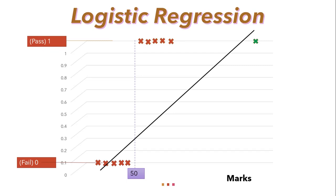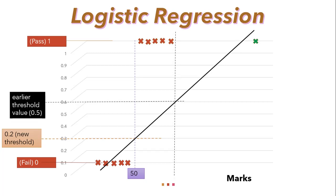Now our hypothesis of h(x) > 0.5 equal to pass doesn't work here anymore. To keep making correct predictions we need to change it to h(x) > 0.2 or something like that. But that's not how the algorithm should work. We can't change the hypothesis each time a new sample arrives. Instead we should learn it from the training set data and then, using the learned hypothesis, make correct predictions for data we haven't seen before.